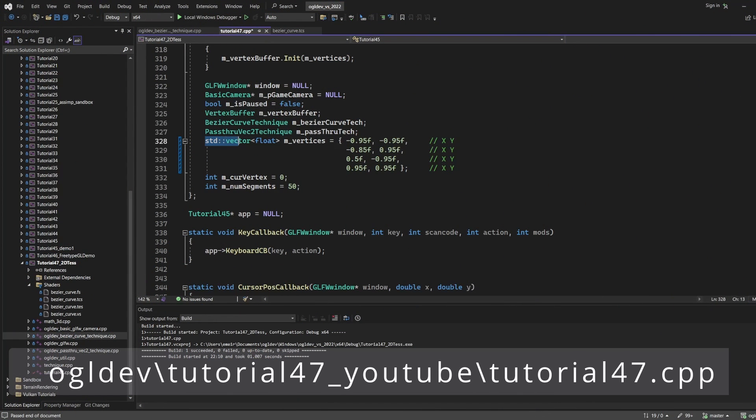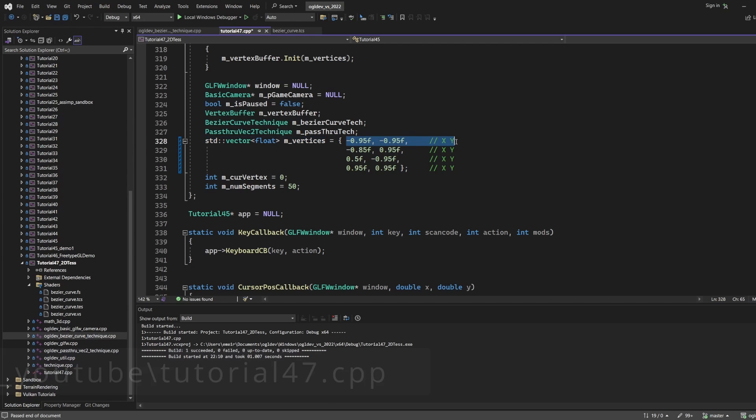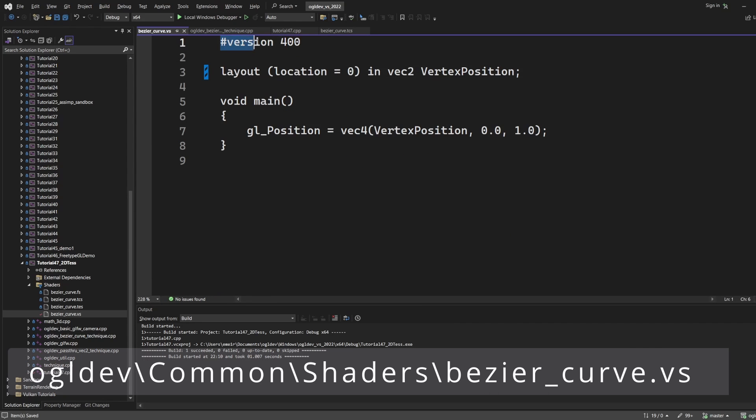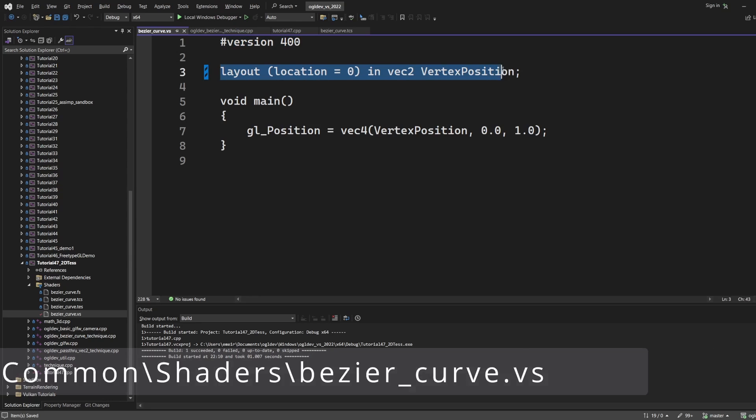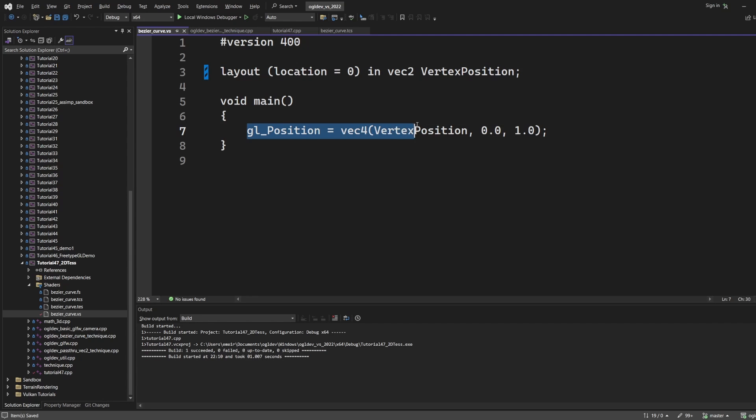First of all we have to prepare an array of vertices where every vertex is a two-dimensional point which is basically our control point. As you can see we have four of them. This array is loaded into the vertex buffer. Next comes the vertex shader which is very simple. It takes the 2D point as input, expands it to a homogeneous coordinate where z is equal to 0 and w is 1.